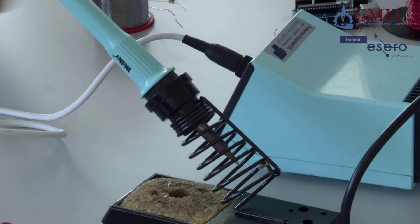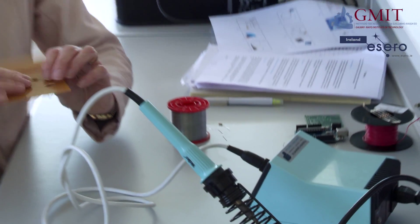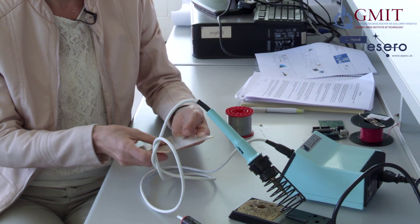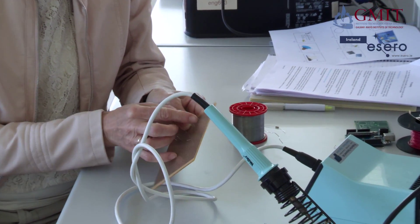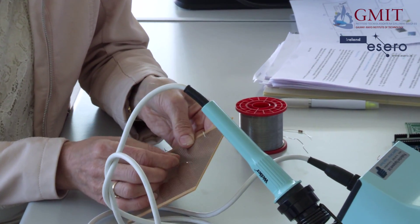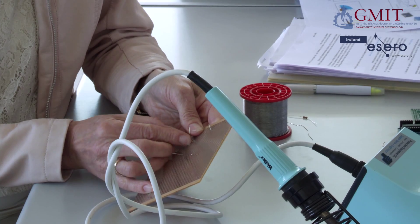So I have a couple of components I have inserted into the strip board here. I'm going to turn it over. Now, it helps sometimes maybe to bend the legs back a little bit to stop the components falling out. So I'm just going to bend them slightly.